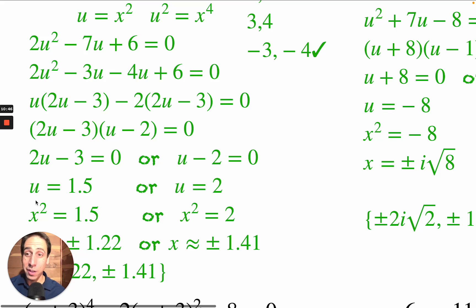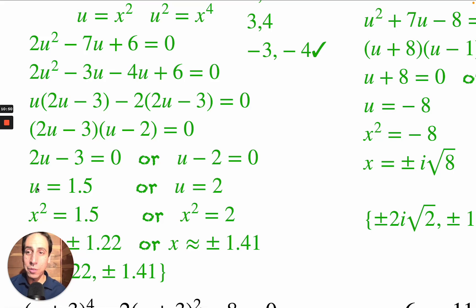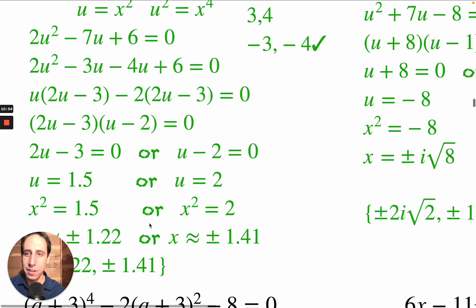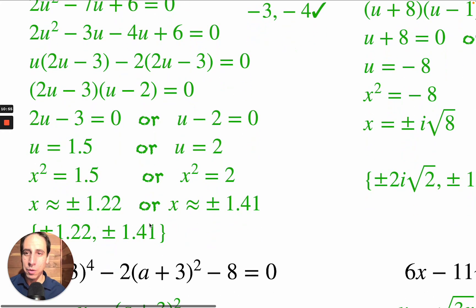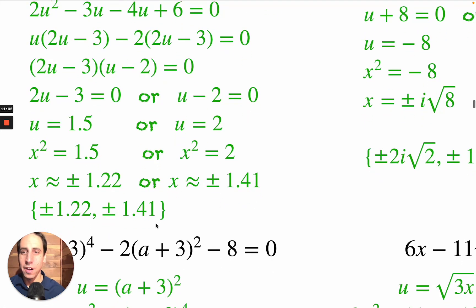Back-substituting: u becomes x squared. We have x squared equals 1.5 and x squared equals 2. Taking the square root of both sides gives x equals plus or minus the square root of 1.5 and x equals plus or minus the square root of 2, which is approximately 1.41. There are four solutions.